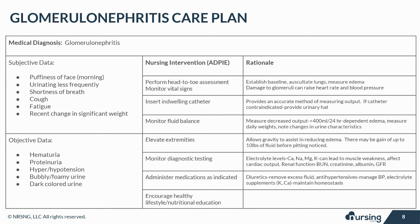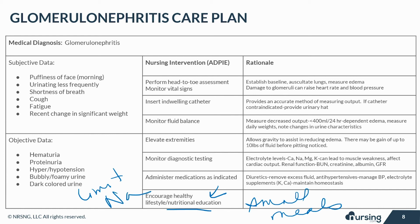Encourage a healthy lifestyle and nutritional education. Offer small and frequent meals. Restrict fluids as necessary. Limit sodium and also protein intake. Encourage exercise to maintain a healthy weight. Control blood sugar in diabetic patients. And, of course, encourage smoking cessation.